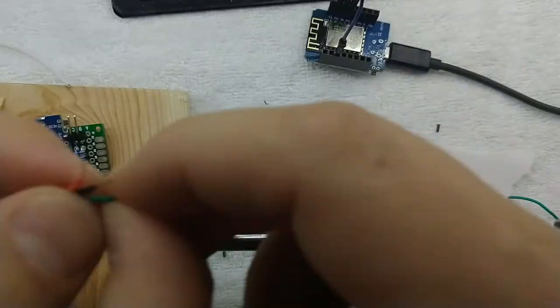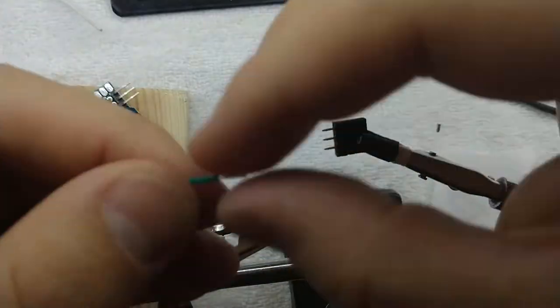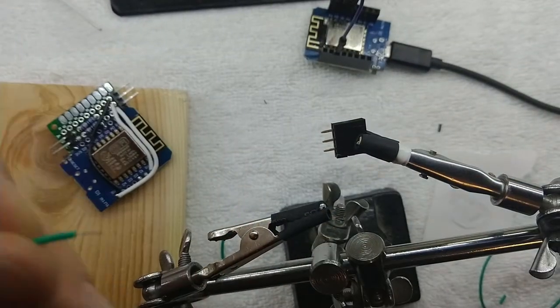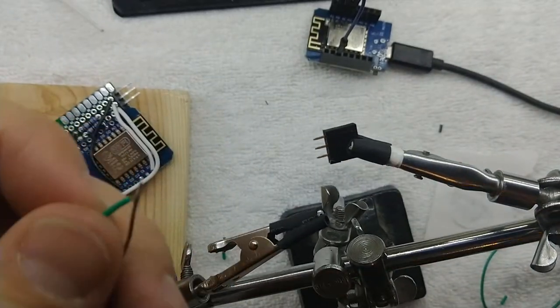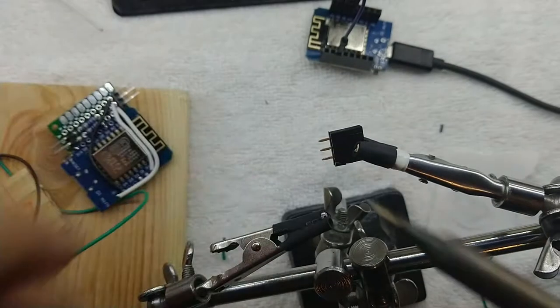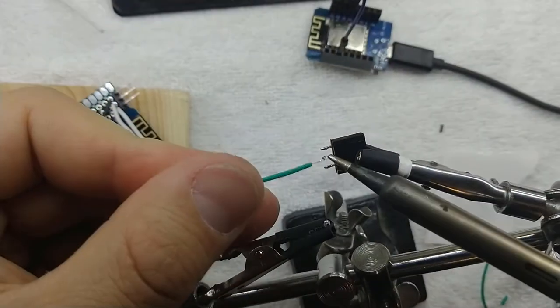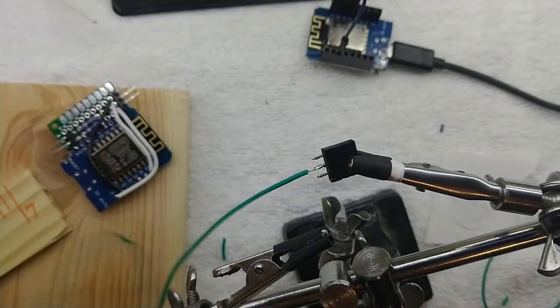Now the main board is all soldered up. So I'm going to go ahead and add some female headers to the LED leads. Same as the LED pads, first tin the leads and then tin the wires and then connect them.